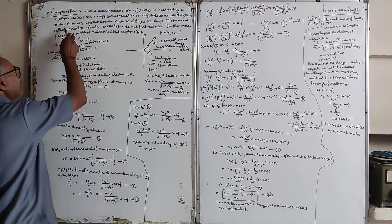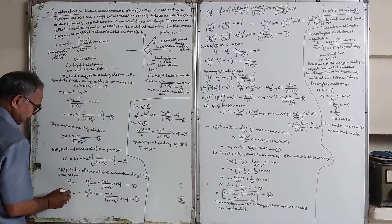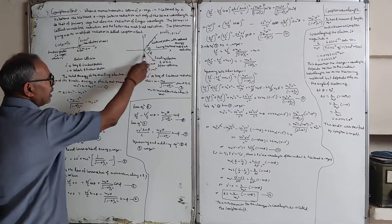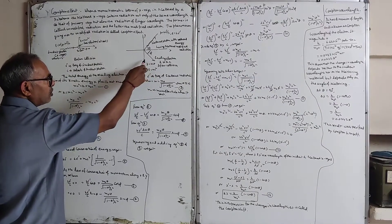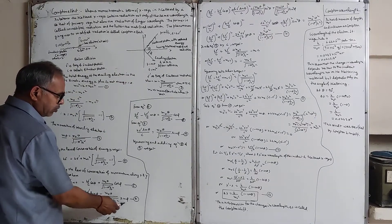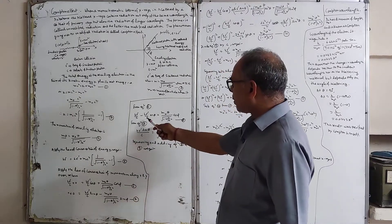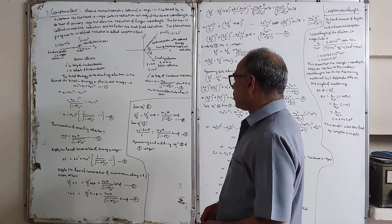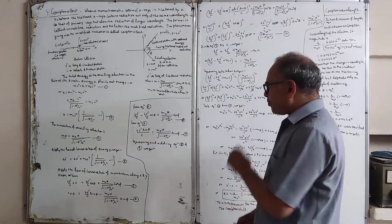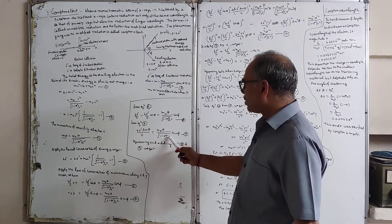Along the y-axis, the initial momentum is zero since there is no y-component. So: h-nu-dash/c · sin(theta) = m₀v/√(1 − v²/c²) · sin(phi). Rearranging the x-momentum equation: h-nu/c − h-nu-dash/c · cos(theta) = m₀v/√(1 − v²/c²) · cos(phi). Squaring and adding both momentum equations eliminates phi using cos²(phi) + sin²(phi) = 1.